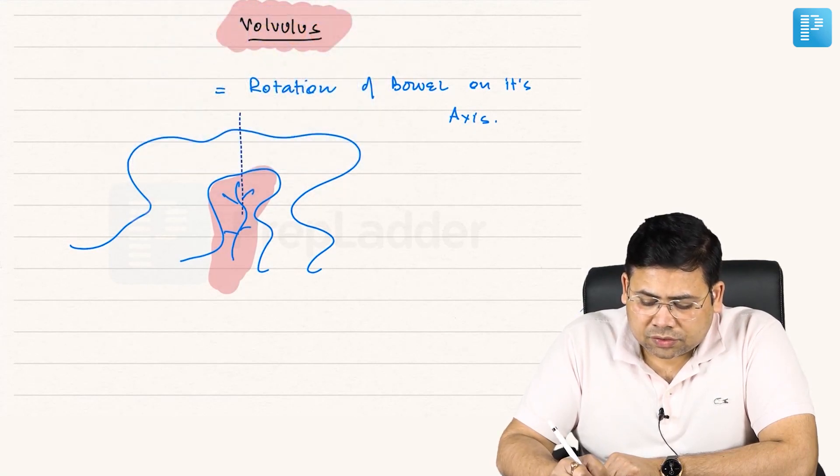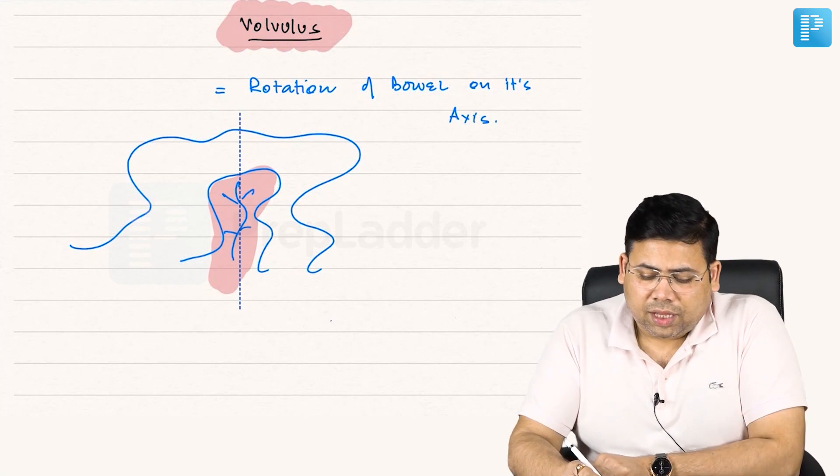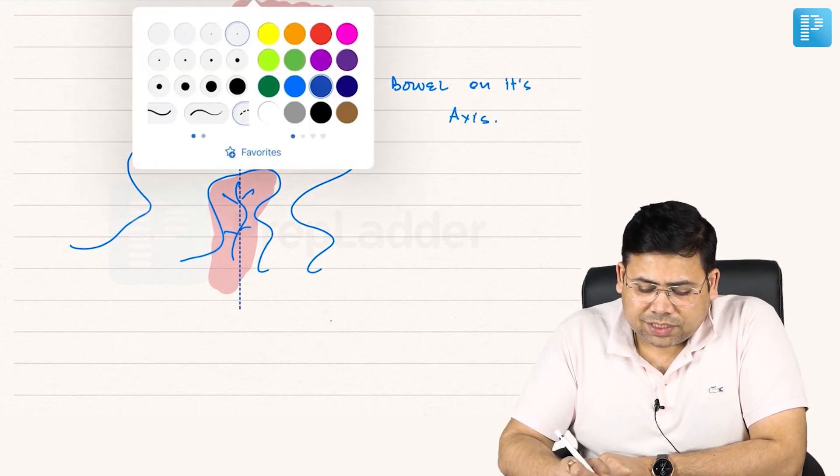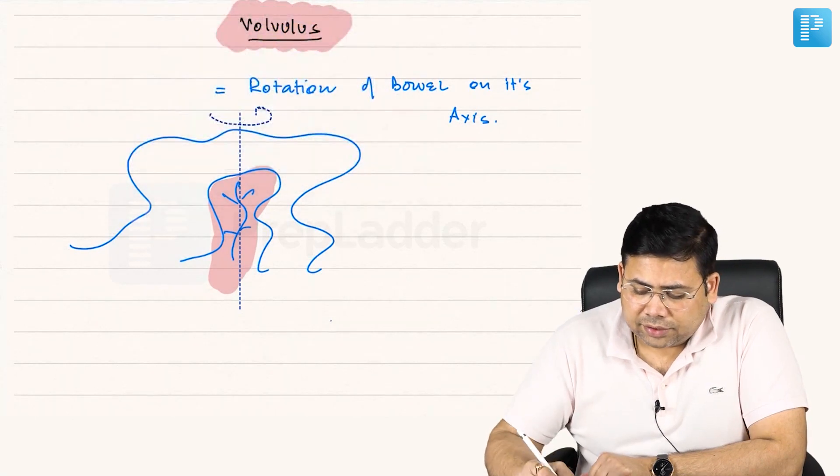This is the axis over which the rotation will happen. And if the rotation happens, what will be the final image like? It will be like this.